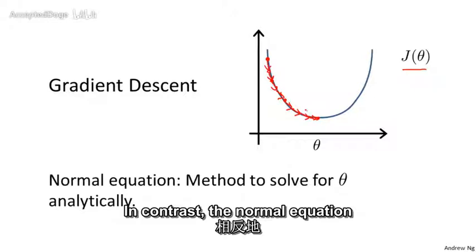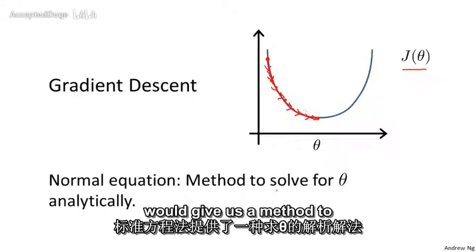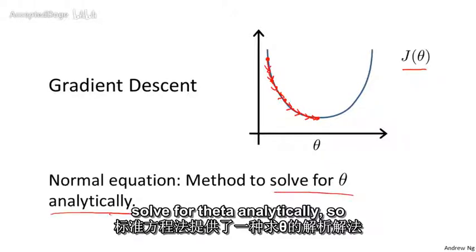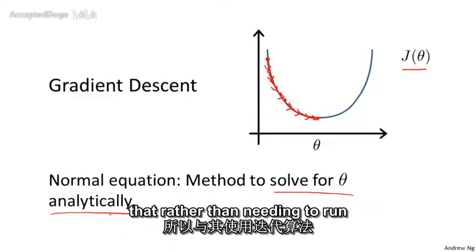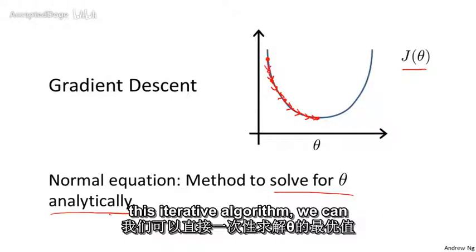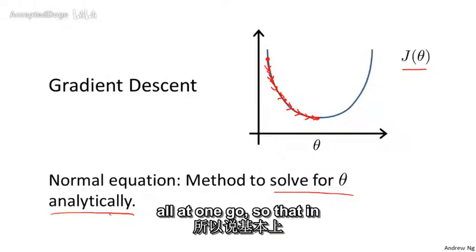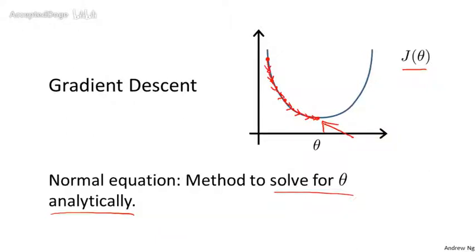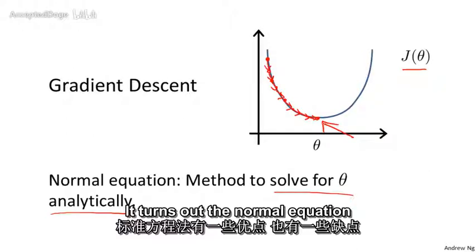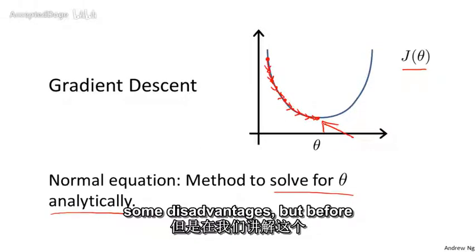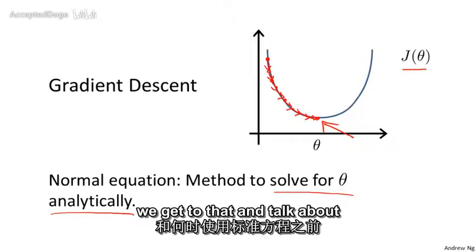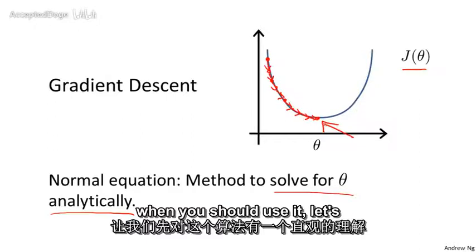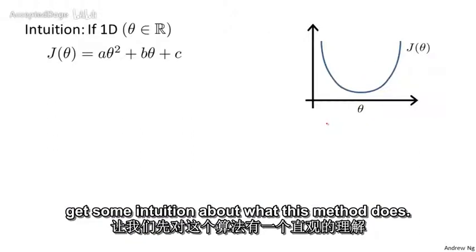In contrast, the normal equation would give us a method to solve for theta analytically, so that rather than needing to run this iterative algorithm, we can instead just solve for the optimal value of theta all in one step. It turns out the normal equation method has some advantages and some disadvantages, but before we get to that, let's get some intuition about what this method does.